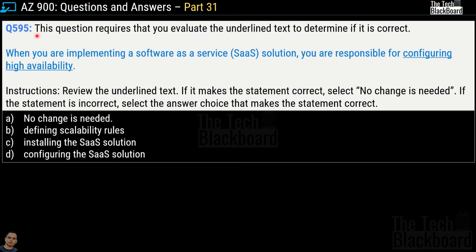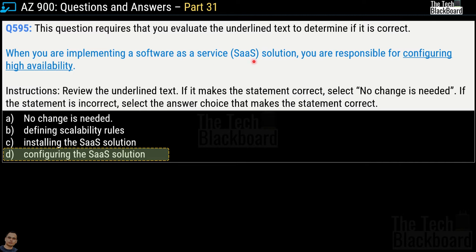Question 595 is another review-the-underlined-text question. The other options are: defining scalability rules, installing the SaaS solution, and configuring the SaaS solution. The correct answer is option D, configuring the SaaS solution. The correct statement becomes: 'When you are implementing a software as a service solution, you are responsible for configuring the SaaS solution,' because high availability is already built into SaaS solutions.